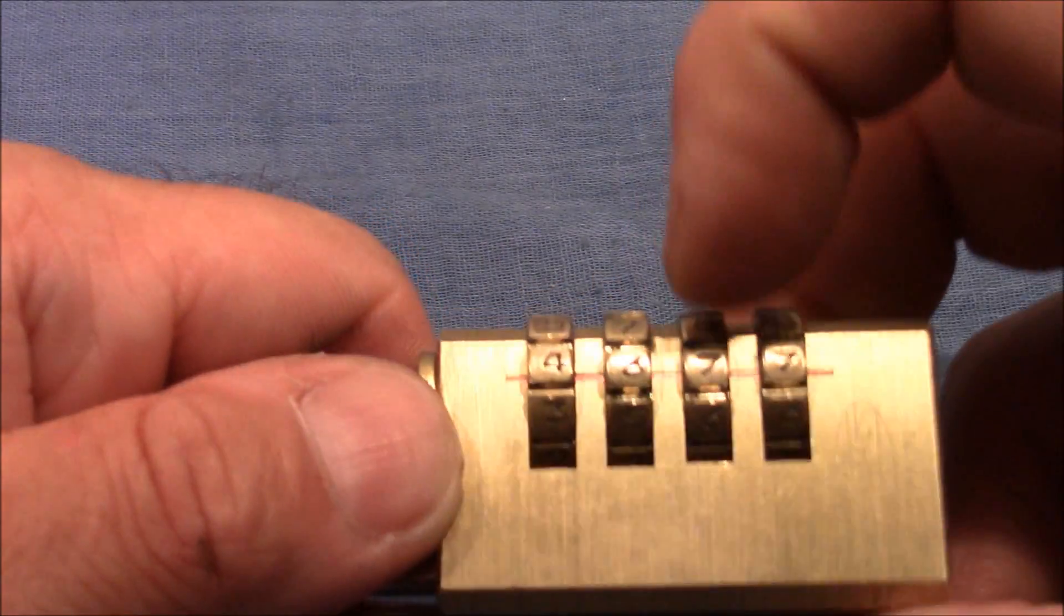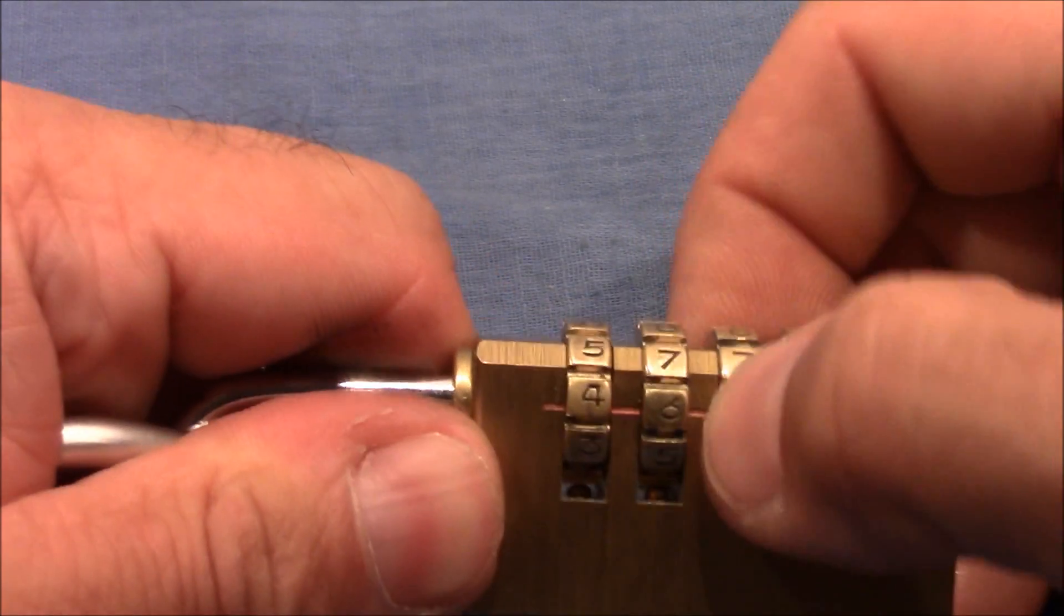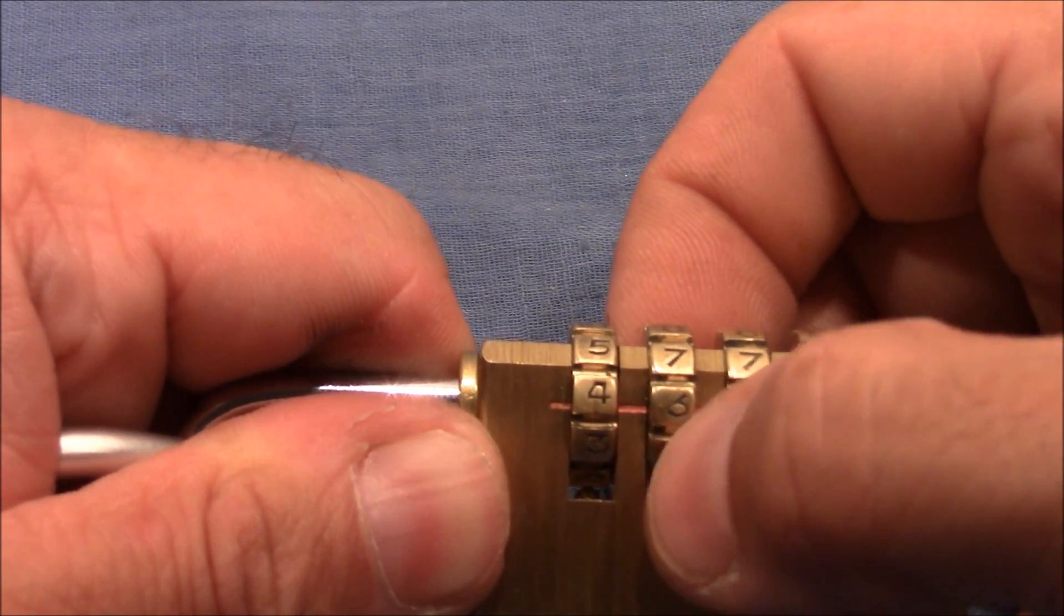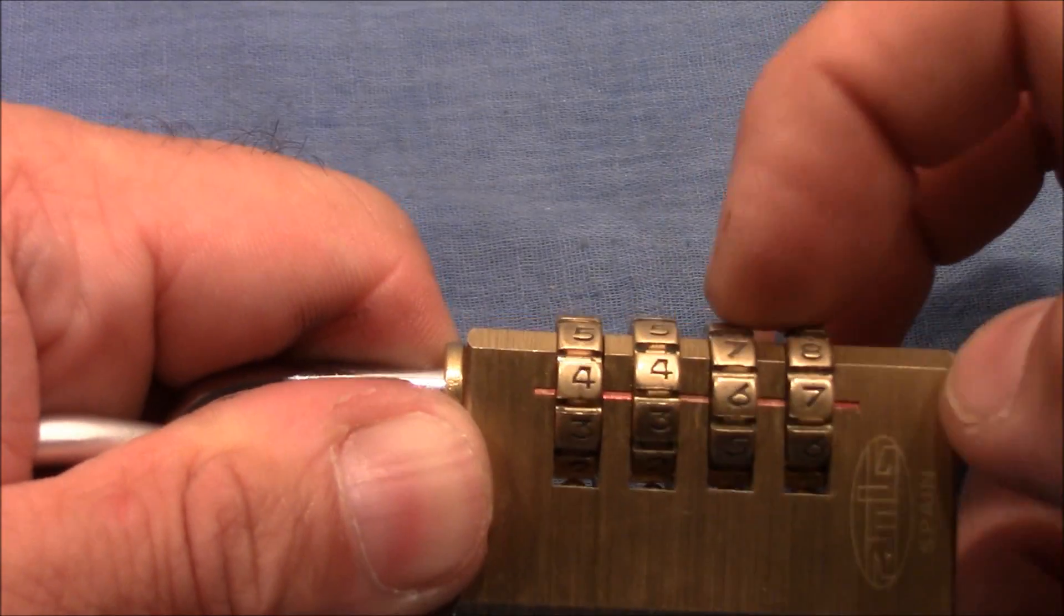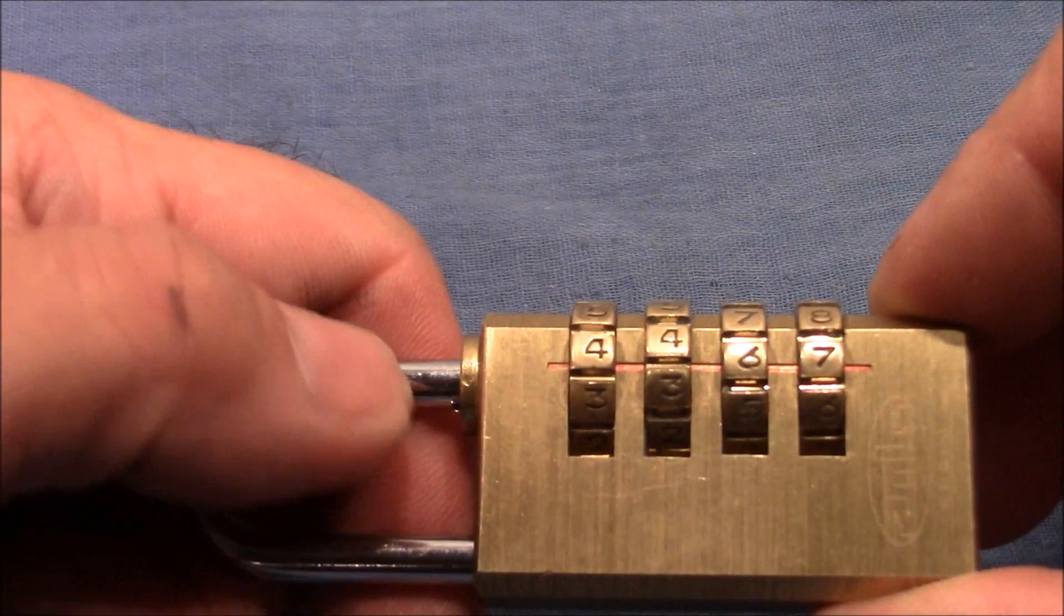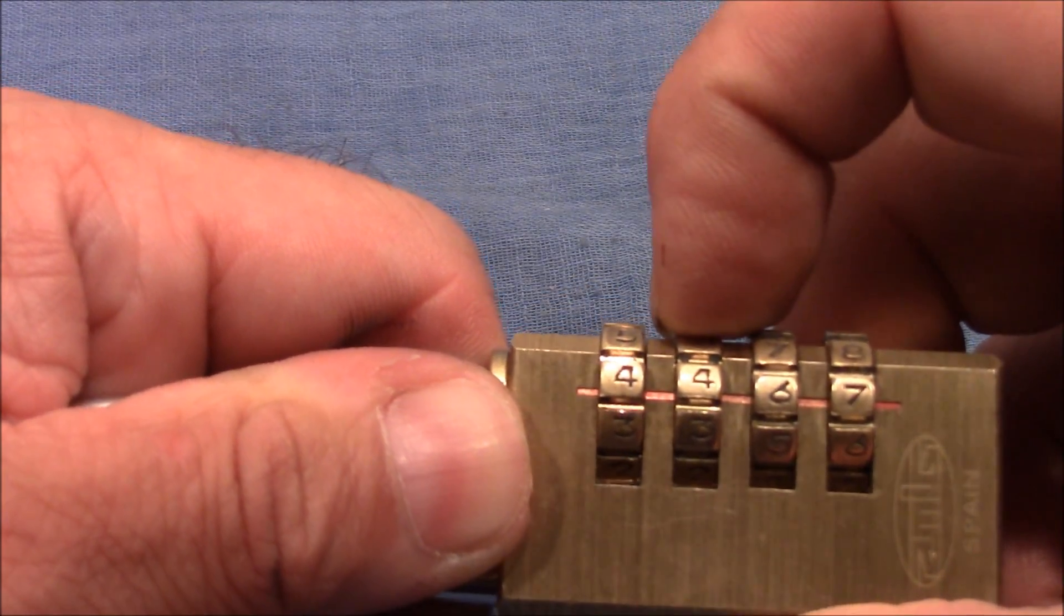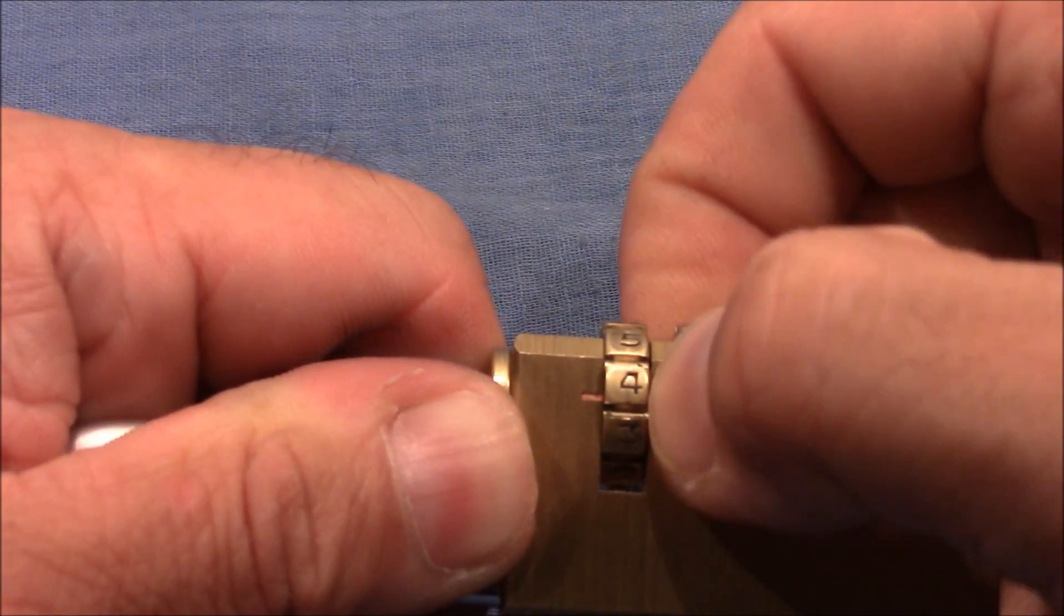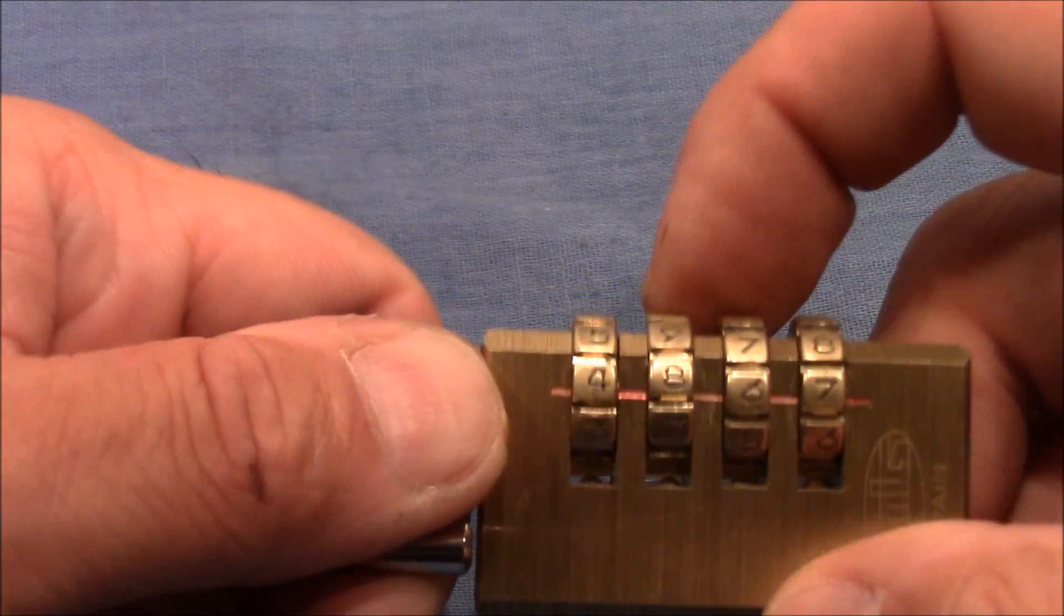So maybe seven isn't the right gate and I move it further to six. Six is also a gate but now let's check wheel number two and it's binding much more. So changing wheel number three to the next position has caused the shackle to come out a little bit further so that it now can bind on that wheel more. And it's open.